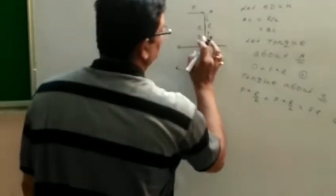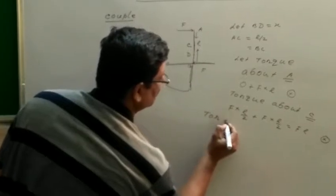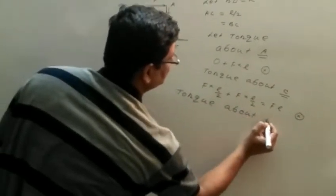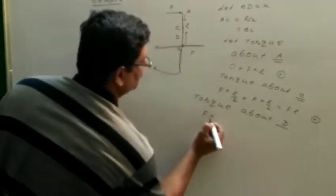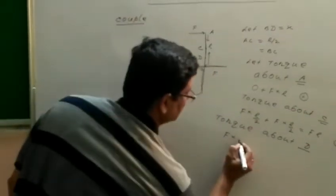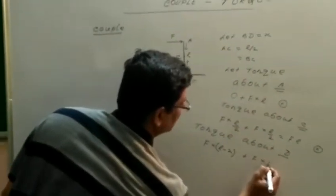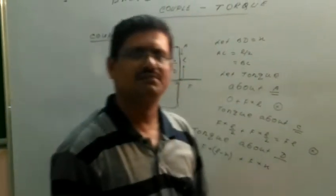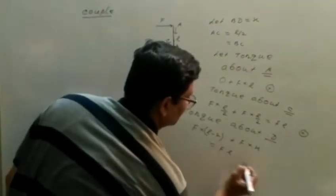Now we want to calculate the torque about point D. The torque is F multiplied by distance L minus X, plus force F into X. These two torques act in the same direction, so we add them. Therefore, the result equals FL in the inward normal direction.